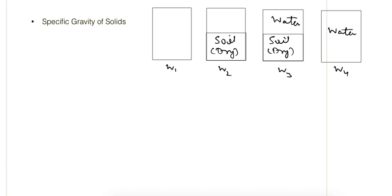Next is the specific gravity of solids determination. For this we also use the pycnometer method. The only difference between water content determination and this is that we take the soil in dry condition, whereas in the water content determination we took it in the moist condition. So here it is in the dry condition.